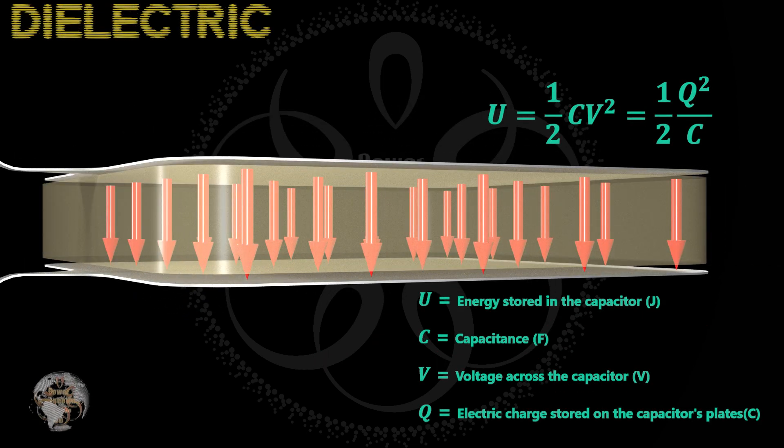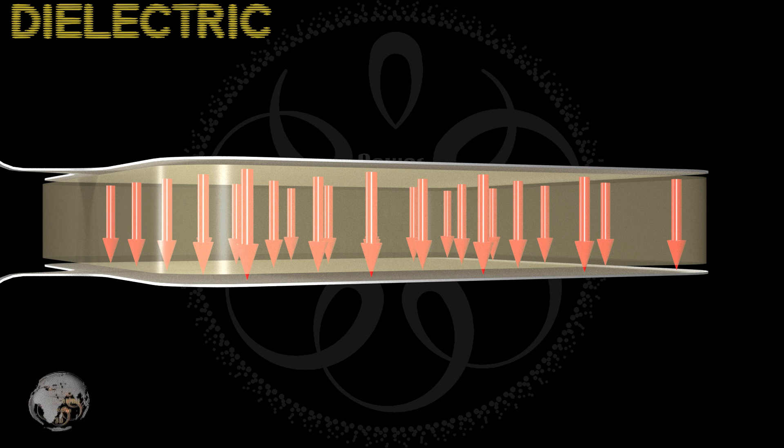By placing a material known as a dielectric between the plates, the capacitance of the capacitor can be increased.